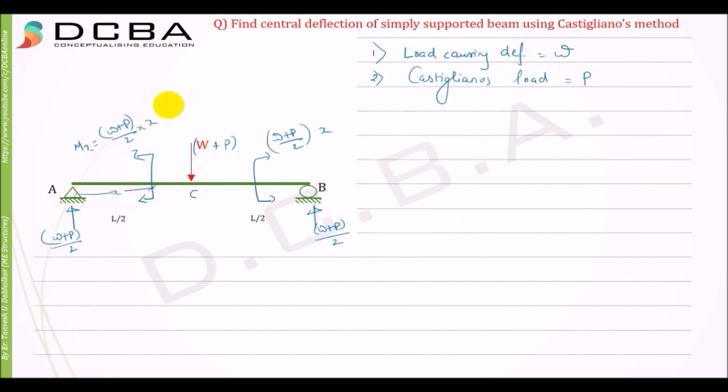To explain this more clearly, let us just take a simply supported beam here with a point load at the center. As you know, the moment diagram for this point load will be like this, WL by 4 or something like that, right? WL by 4 value. So if you see this, this moment equation is only valid for this much part because after that it is decreasing.